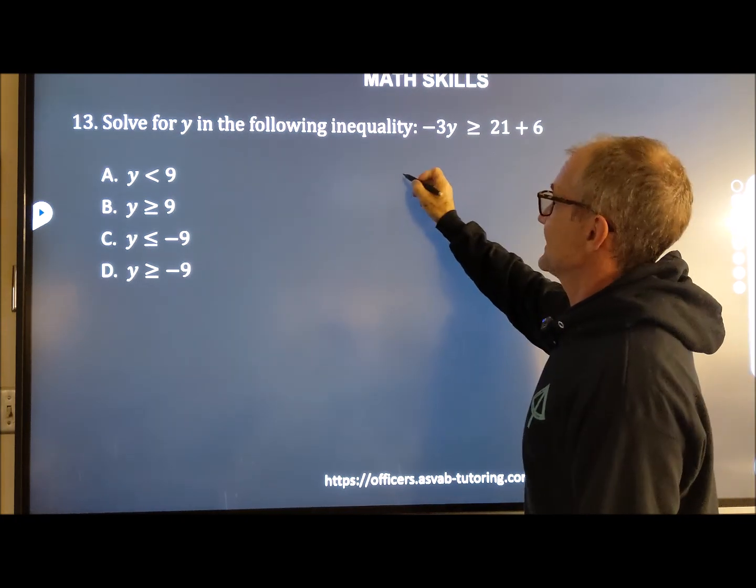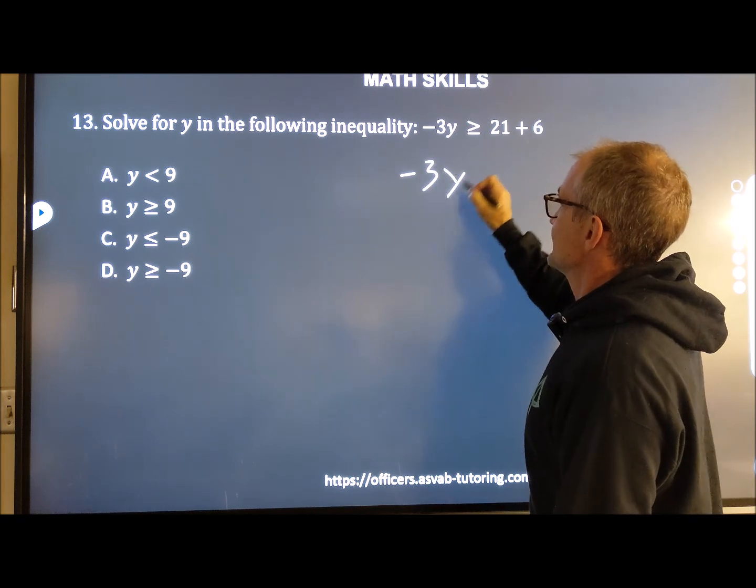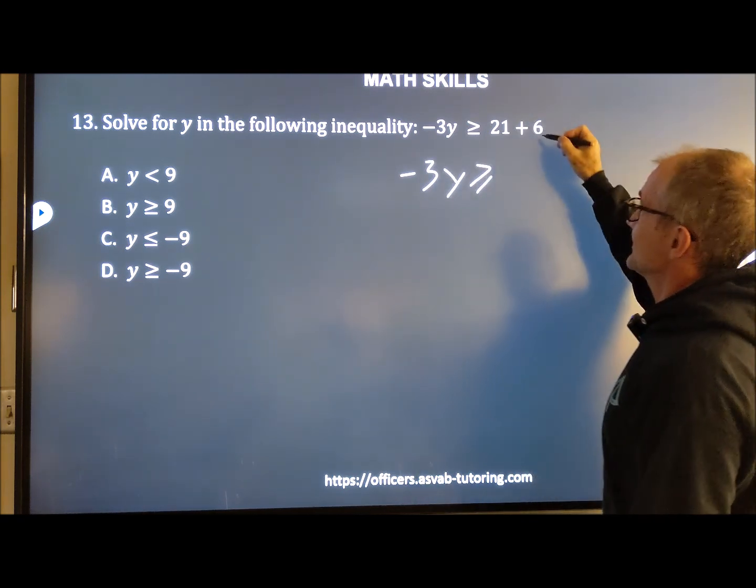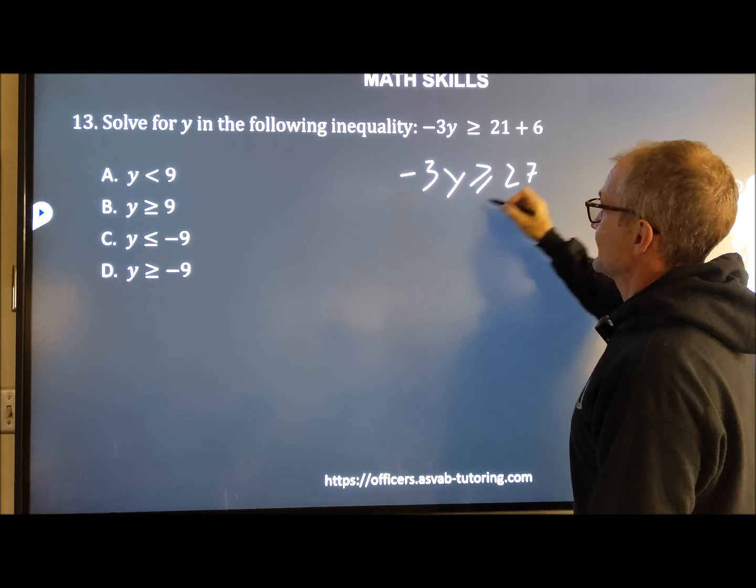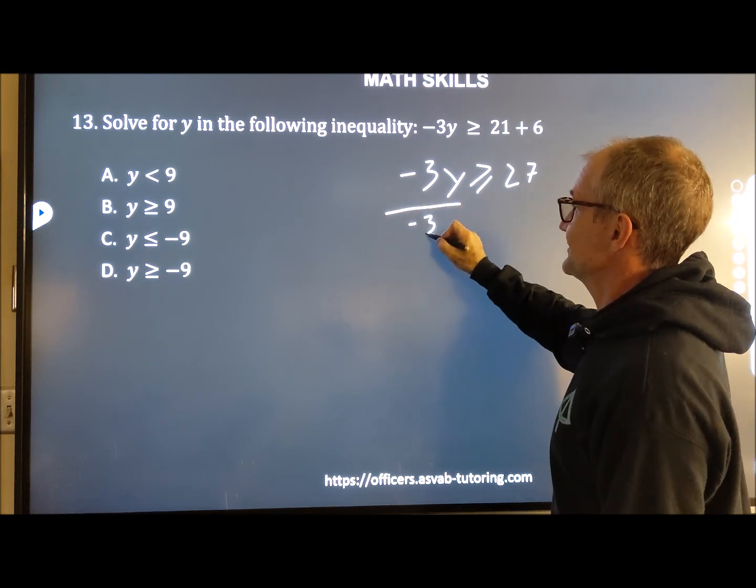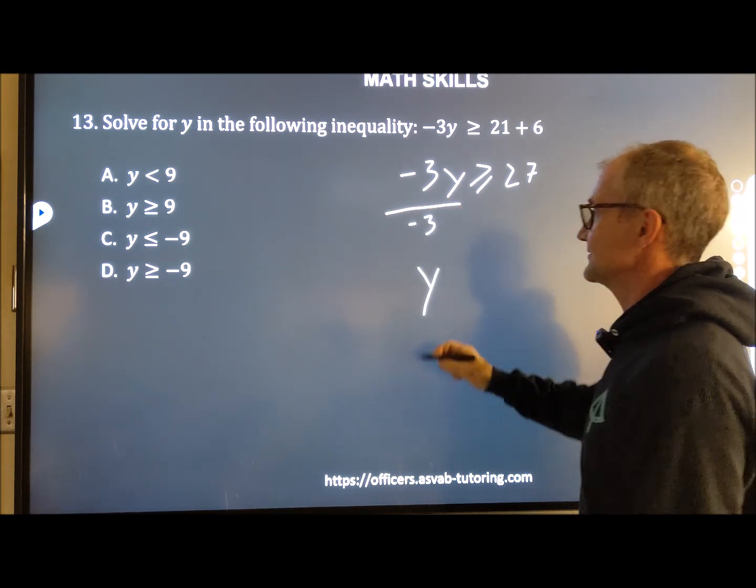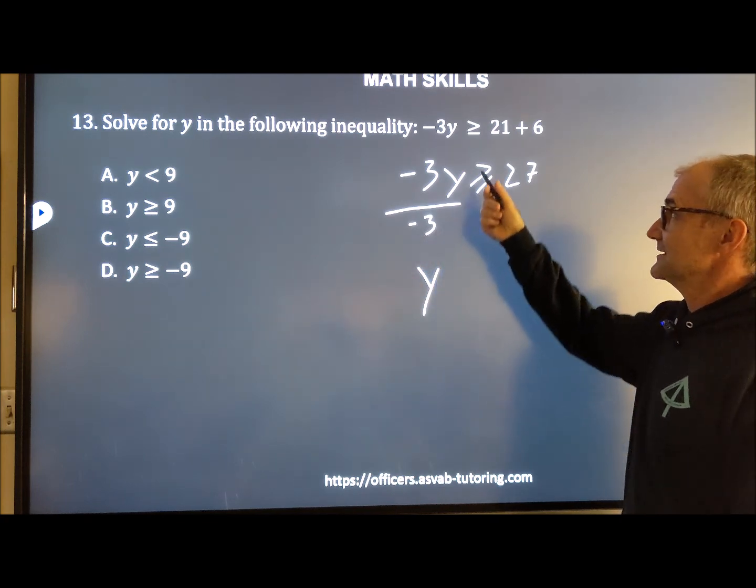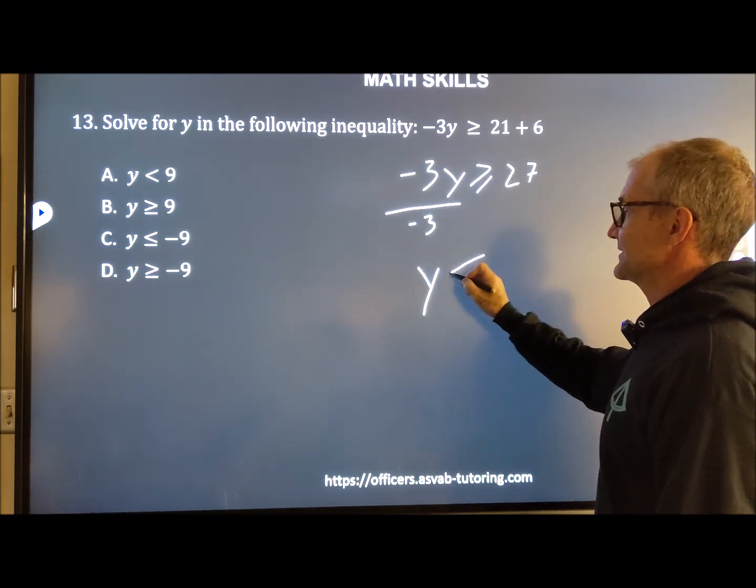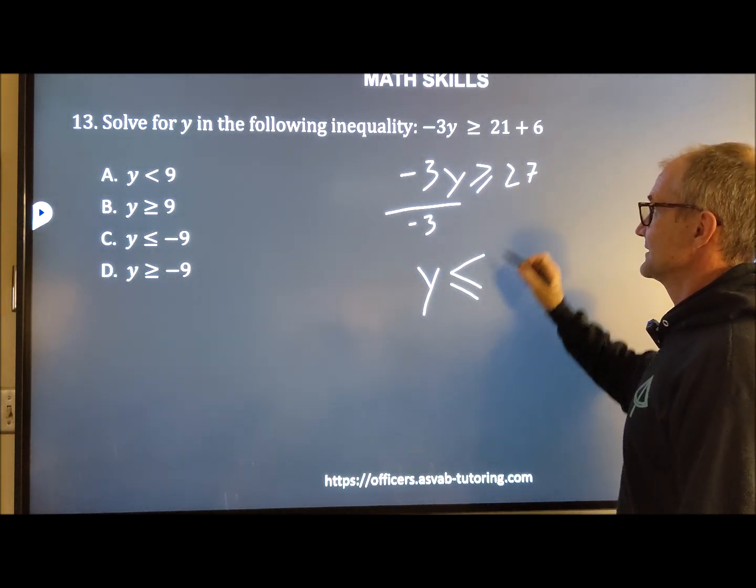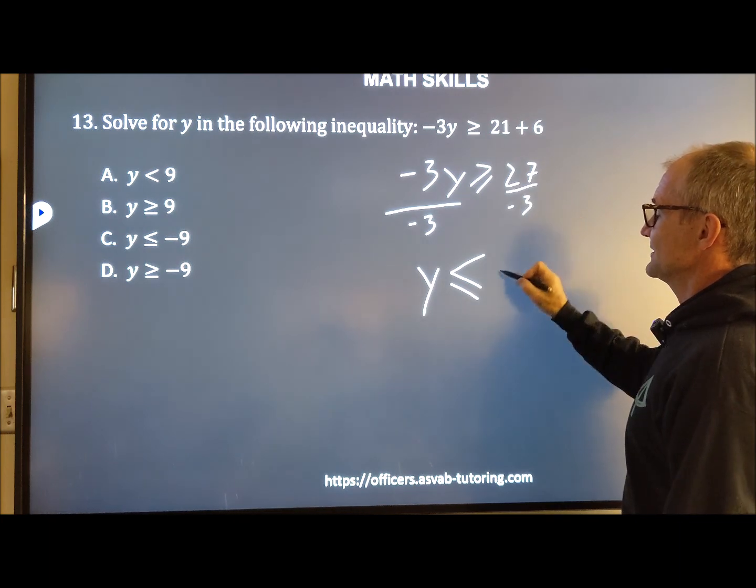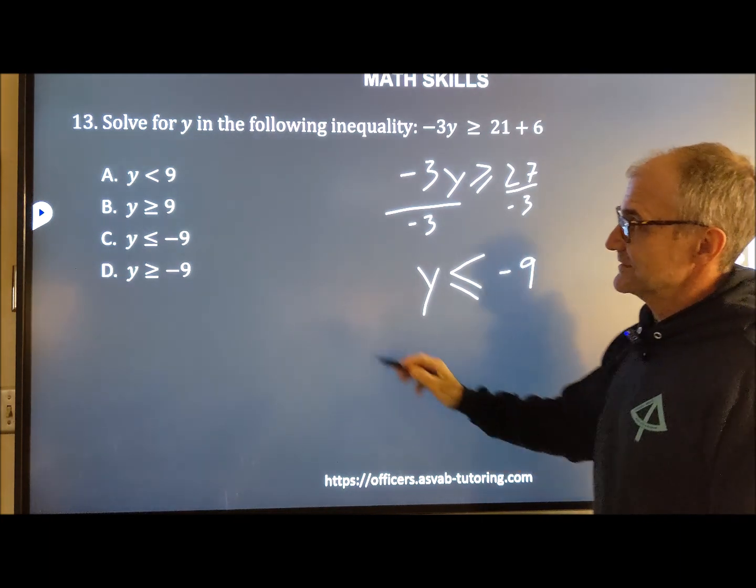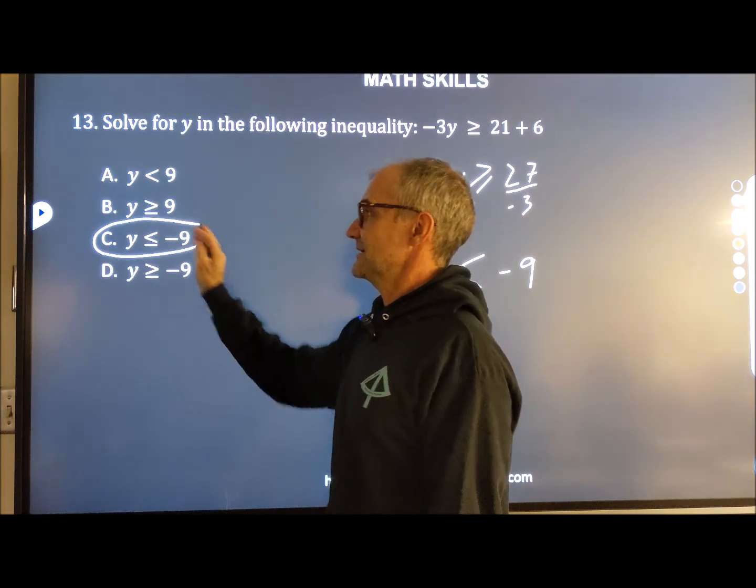So I have negative 3y is greater than or equal to 21 plus 6, which is 27. I'm going to divide both sides by that negative 3, giving me y by itself. Because I am dividing by that negative, this greater than now becomes less than or equal to. 27 divided by negative 3 is negative 9, giving me this answer C right here.